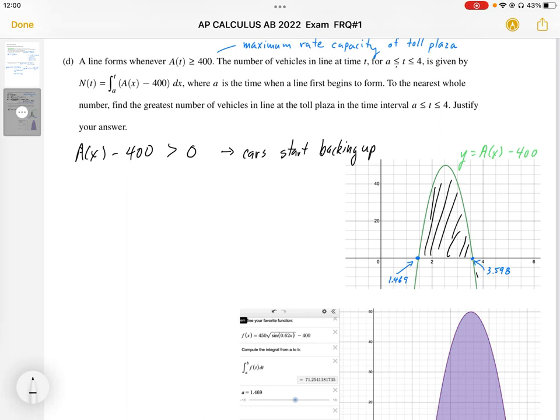This area represents the maximum number of cars lined up at the toll plaza. We justify this with A(x) - 400 > 0. Between T = 1.469 hours and T = 3.598 hours, we're getting the most cars backing up.